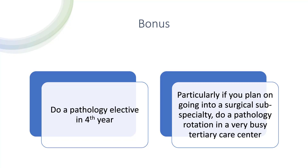For bonus tips, if you really want to learn a lot more pathology, do a pathology elective in your fourth year. If you're planning on going into a surgical subspecialty, I recommend doing a pathology rotation in a very busy tertiary care center — this will make certain aspects of your subspecialty residency easier if you already have knowledge of the diseases which produce pathology specimens in a busy center. That's it — I wish you lots of luck studying pathology.